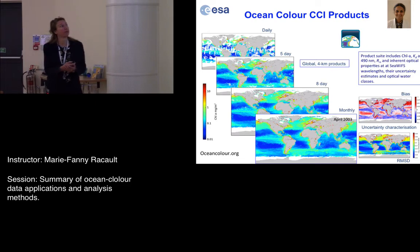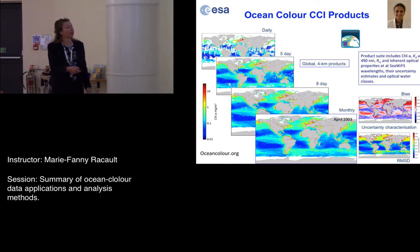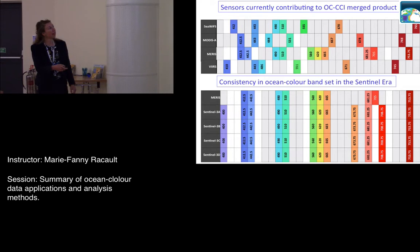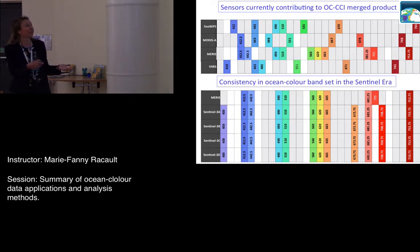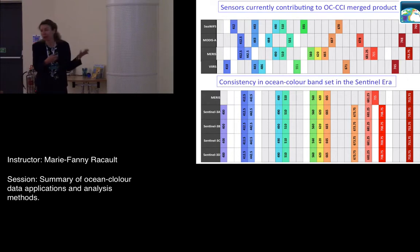Shuba gave a very nice talk on the Ocean Color Climate Change Initiative, presenting the products, how the sensors have been merged, and a little bit about errors, bias, and uncertainty characterization — using bias and mean square difference. This slide triggered a lot of discussions; it came back several times in the questions and discussions on the different wave bands.